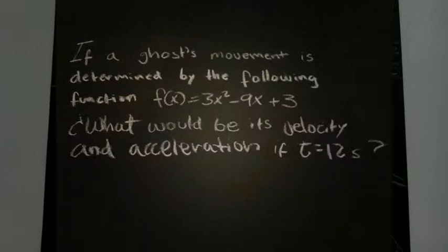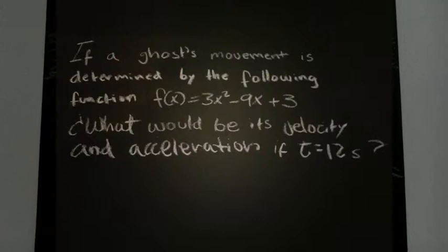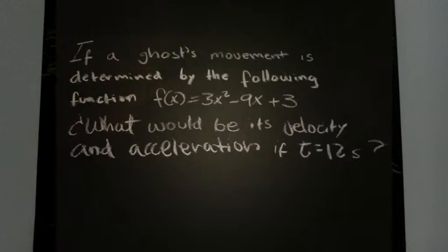If a ghost's movement is determined by the following equation, f(x) = 3x² - 9x + 3, what would be its velocity and acceleration if time is equal to 12 seconds.